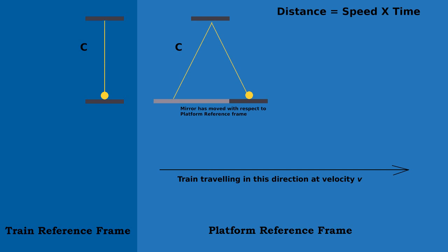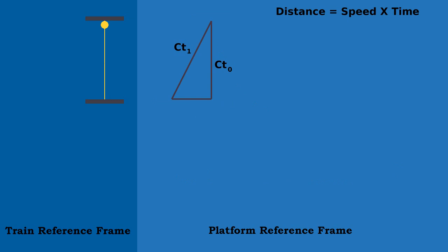So what? Well, we know that distance equals speed times time. And speed for light is C. So if we call the distance the light travelled from the train frame of reference CT0, and the distance the light travelled from the platform frame of reference CT1, and add the speed that your train is travelling as a proportion of the speed of light, and call that V, we get a triangle. So let's ask Pythagoras.